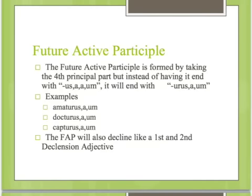Now we're going to learn a new participle: the future active participle. It is formed by taking the fourth principal part — your perfect passive participle — but instead of ending in -us, -a, -um, it ends in -urus, -a, -um. Here's a trick: the -ur- makes it future. So instead of amatus, it's amaturus, -a, -um; instead of doctus, it's docturus, -a, -um; instead of captus, it's capturus, -a, -um. The future active participle also declines like a first and second declension adjective, just like bonus or magnus.